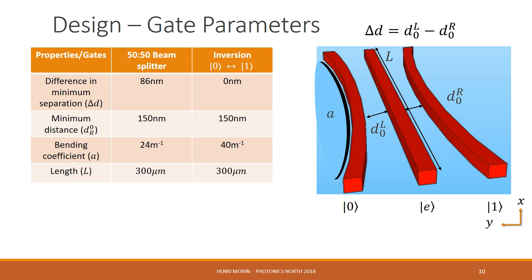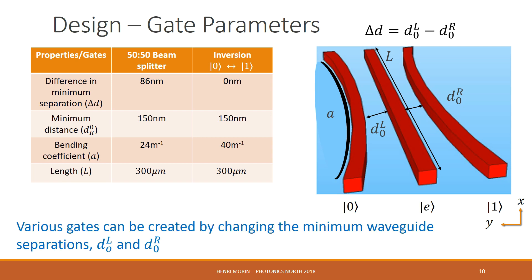The bending coefficient has a value of 24 inverse meters for the beam splitter and 40 inverse meters for the inverter, and both gates have a length of 300 microns. As you can see, various gates can be created by changing the minimum waveguide separation.